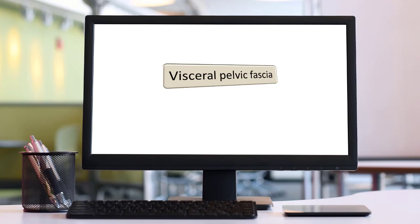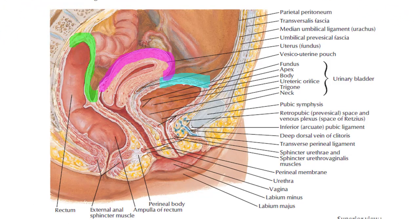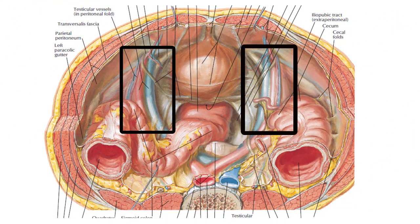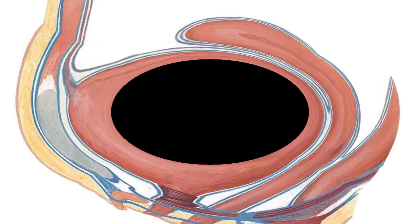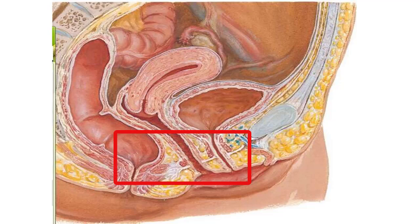Visceral pelvic fascia covers the pelvic viscera such as the bladder, prostate, and uterus, as well as the vessels and nerves supplying these organs. It also forms septa between retroperitoneal organs, such as the rectovaginal septum between the rectum and the vagina, and the vesicovaginal septum between the bladder and the vagina, filling the gaps between organs to provide support.